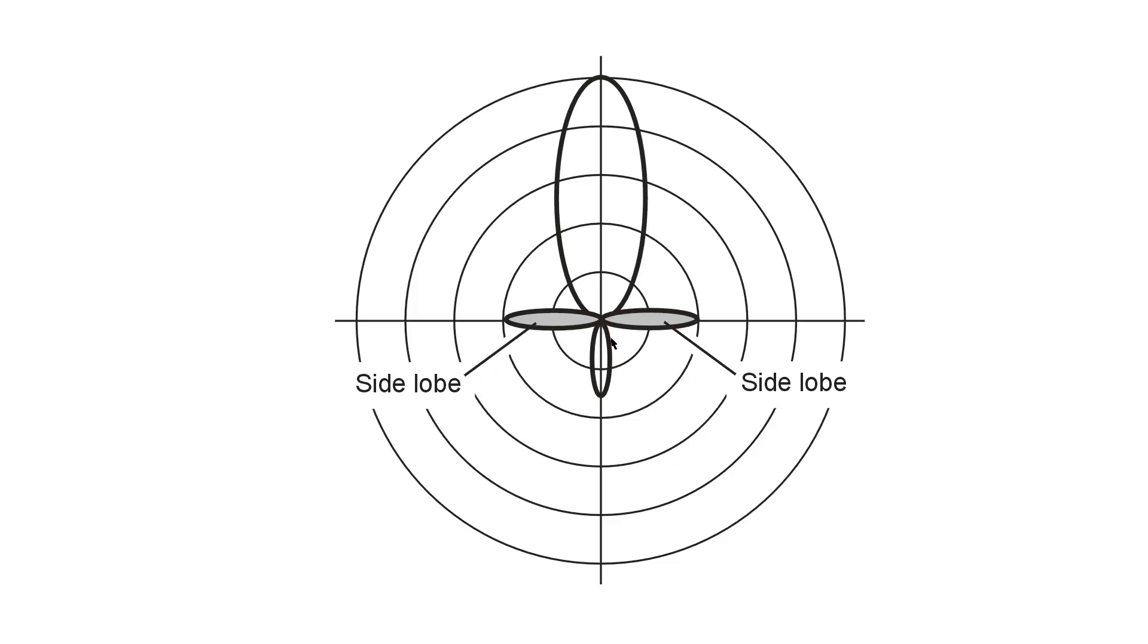Now a Yagi antenna, or quad antenna, two element, might have a pattern similar to this if it were pointed north.